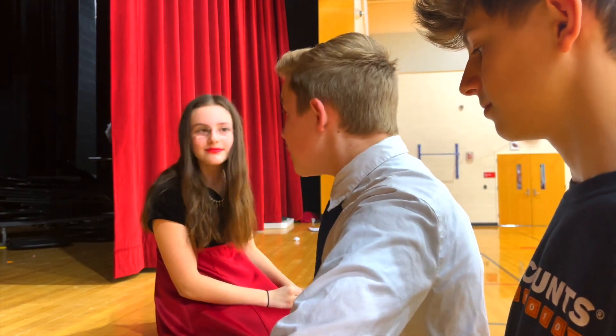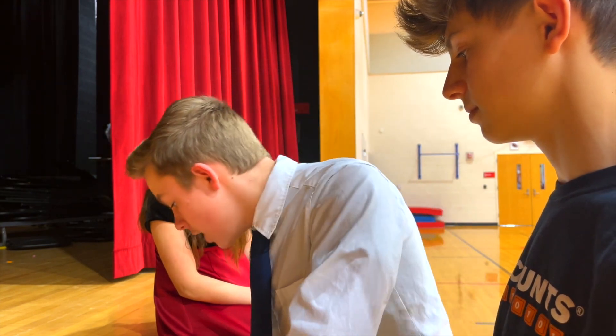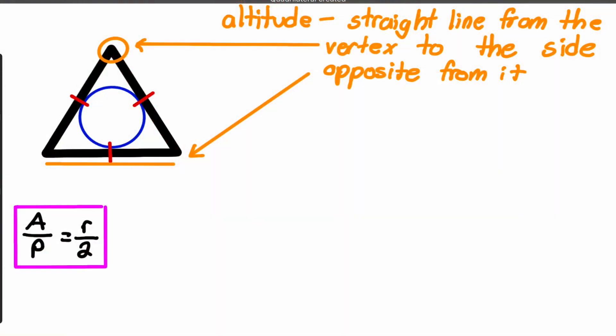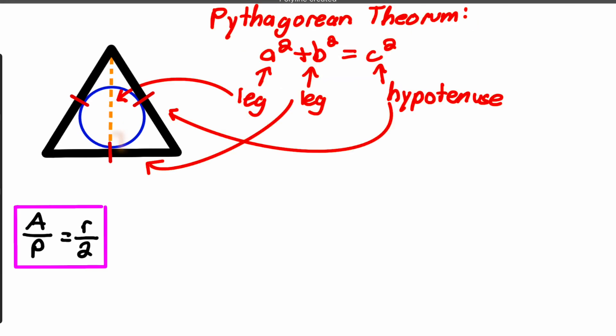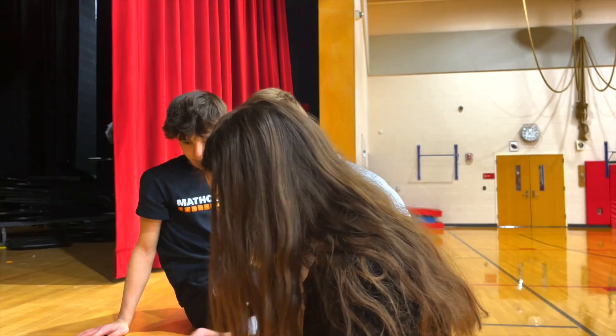If we simplify this equation, we get area divided by perimeter equals radius divided by two. To find the area of this triangle, we must find the height. In an equilateral triangle, we find the altitude instead of the height. The altitude of a triangle is the straight line from the vertex to the side opposite of it. To find the altitude, we must split the triangle up into two congruent right triangles so we can use the Pythagorean theorem. If a² plus b² equals c², then 6² plus b² equals 12².